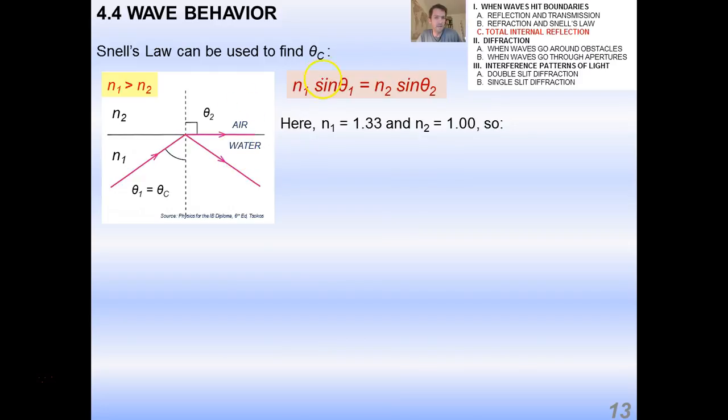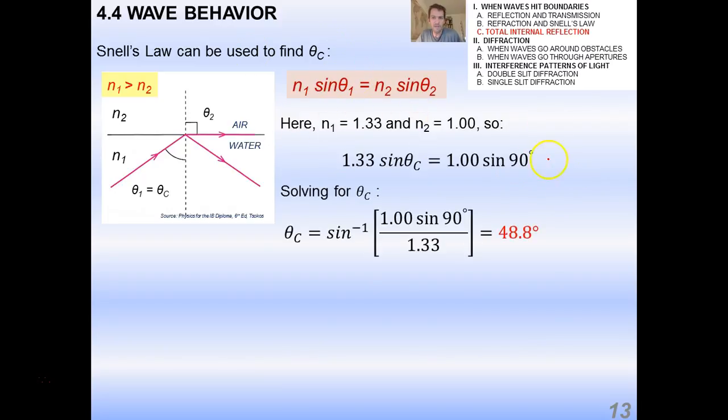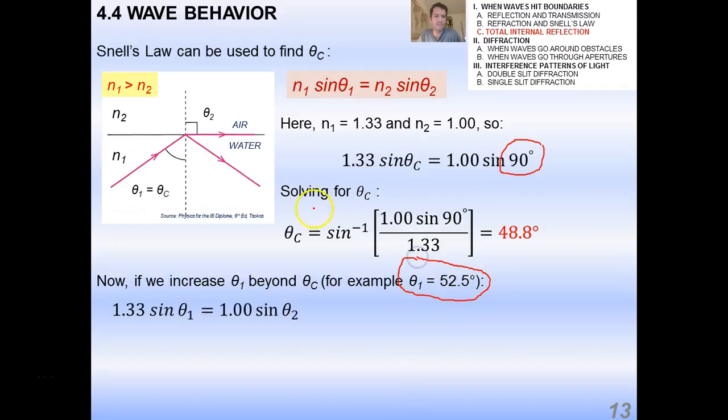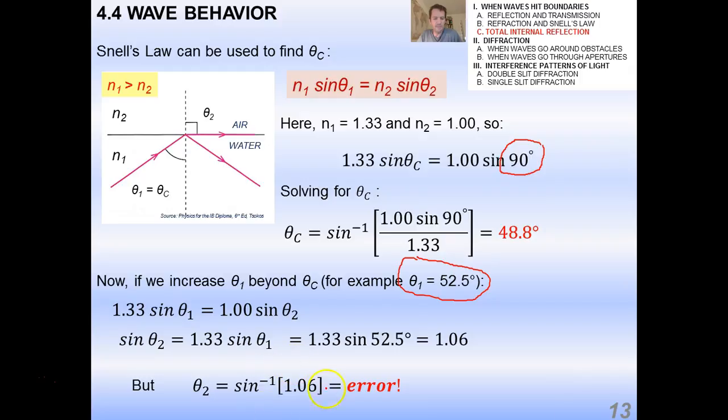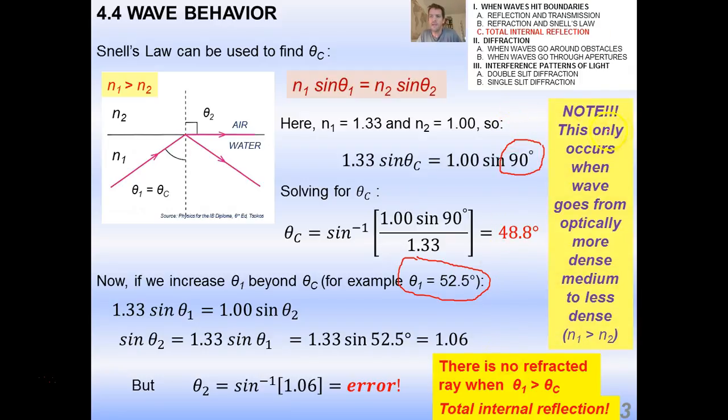Now, we can use Snell's Law to actually find what the critical angle is, noting that N1 sine theta1 equals N2 sine theta2. If we take, for example, water and air, here N1 is 1.33 and N2 is 1 because it's air. I set up Snell's Law as such where theta2, I set it equal to 90. And, of course, sine of 90 is going to be 1, so that's pretty easy to deal with. So, I do a little trigonometry and algebra here and I solve for the critical angle, I get 48.8 degrees. Now, if you increase theta1, again, beyond the critical angle, for example, if I take theta1 to be, say, 52.5, then what happens, if you look at my math here, you end up with something that is impossible, right? Because the sine can't be greater than 1, so that's an error. So, that's actually proof of that mathematically. Note that there, again, there is no refracted ray when theta1 is greater than thetaC. It's called total internal reflection, and this only occurs when the wave goes from an optically more dense medium to less dense. Or, in other words, N1 is greater than N2.